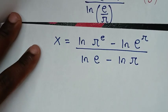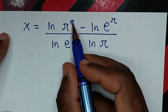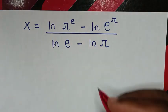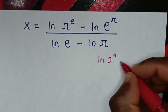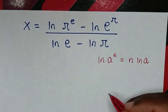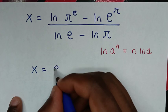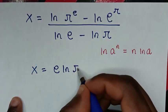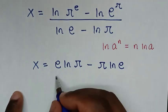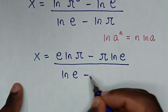Next, we apply the log power rule ln(a^n) = n·ln(a). So ln(π^e) becomes e·ln(π), and ln(e^π) becomes π·ln(e). The expression becomes x = (e·ln(π) − π·ln(e)) / (ln(e) − ln(π)).